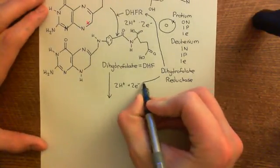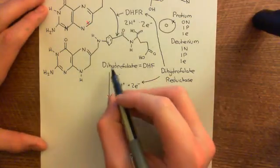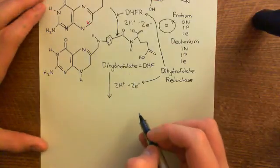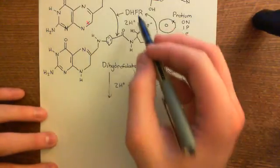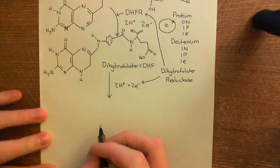And this is why this enzyme is known as dihydrofolate reductase, because it's going to reduce dihydrofolate to tetrahydrofolate. So it's the same enzyme which reduces both folic acid and then dihydrofolate.